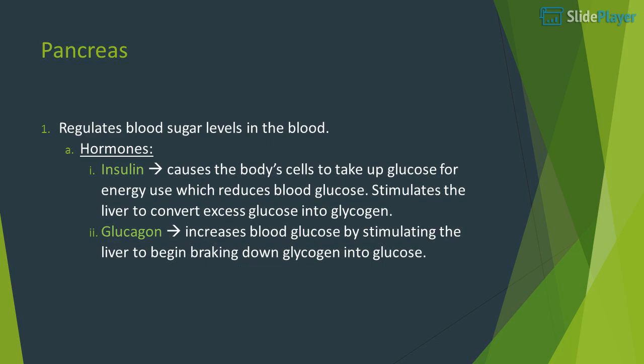Pancreas: regulates blood sugar levels in the blood. Hormones: insulin causes body cells to take up glucose for energy use, which reduces blood glucose, and stimulates the liver to convert excess glucose into glycogen. Glucagon increases blood glucose by stimulating the liver to begin breaking down glycogen into glucose.